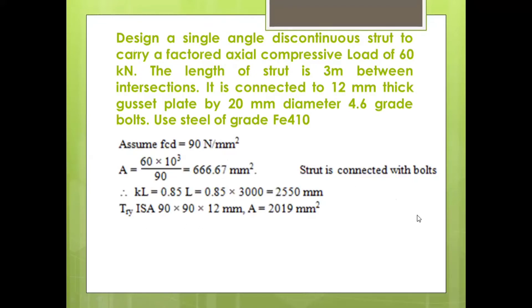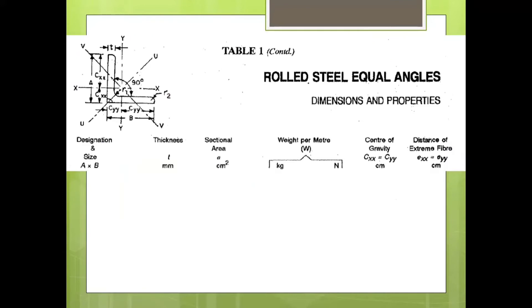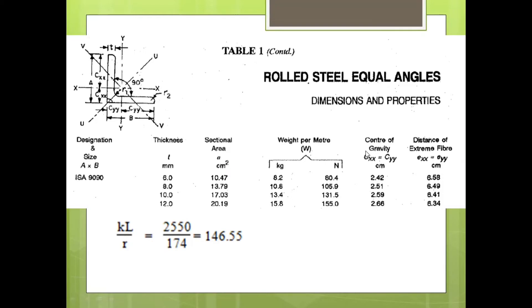After selecting the section, we need to find what is the compression load carrying capacity of the section. For that we need slenderness ratio. Slenderness ratio is KL by R minimum. R minimum is given by RXX and RYY values. RXX and RYY values again you will get from the steel table. So there is another part on another next page. We will find RXX and RYY values for the same section. So RYY is usually minimum value, which is given at 17.4 cm. So in millimeter, it is 174 mm.